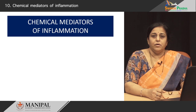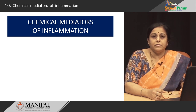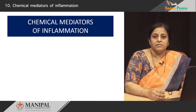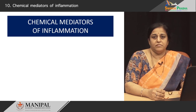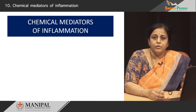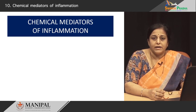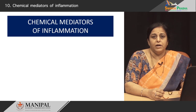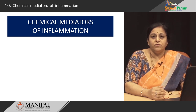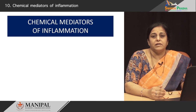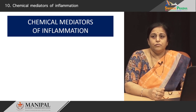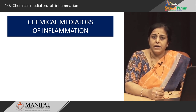Good morning, dear students. We were learning about the chemical mediators of inflammation in the last class. We learned that chemical mediators are substances that initiate or regulate the inflammatory response. They could be either cell-derived or plasma-derived. We learned some of the cell-derived mediators, which are vasoactive amines like histamine and serotonin, and arachidonic acid metabolites, which give rise to two pathways producing prostaglandins and leukotrienes. We will continue and learn about more of these cell-derived and plasma-derived chemical mediators in today's class.